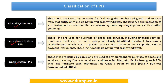There are three types of PPIs: closed system, semi-closed, and open system. Closed system PPIs facilitate purchase of goods and services from that entity only — for example, keeping a balance with Amazon usable only on Amazon. They do not permit cash withdrawal, and their issuance does not require prior approval of RBI.